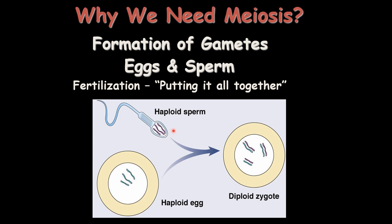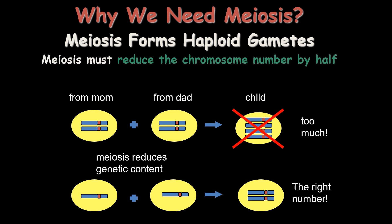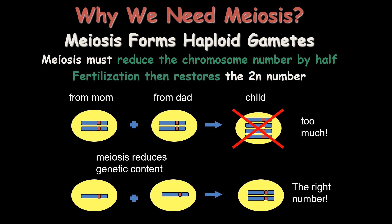During fertilization, when egg and sperm are fused together, they form a zygote. These two combine — 23 and 23 — making a diploid zygote with 46 chromosomes, which makes human life possible. Meiosis reduces the number of chromosomes by half, and fertilization then restores that number.